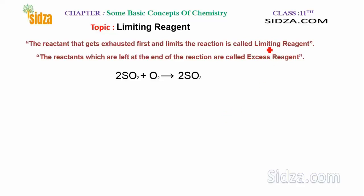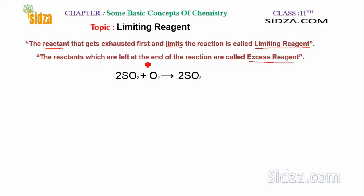What is a limiting reagent? The reactant that gets exhausted first during a chemical reaction and limits the reaction is called the limiting reagent. The reactants which are left at the end of a reaction are called excess reagents.